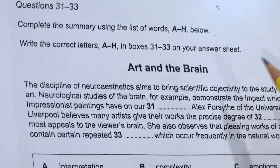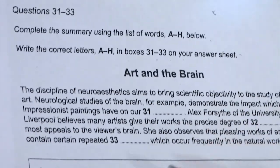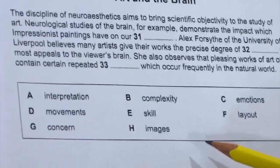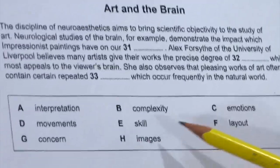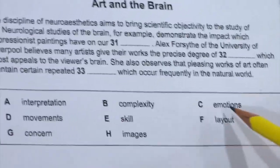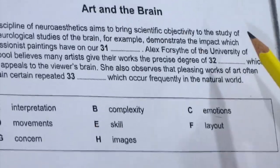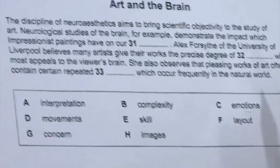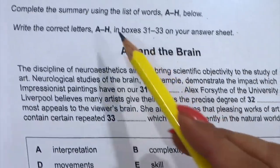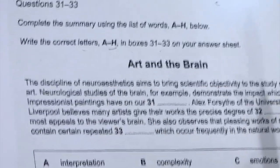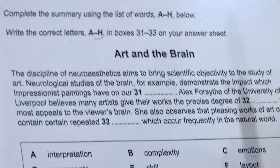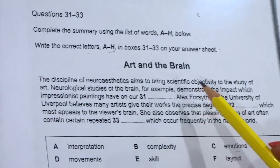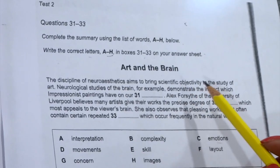Make sure you are writing the words from A to H. You are going to use the word A, B, C, E, or H. But you are not going to write the full word like 'interpretation', 'complexity', or 'emotions'. If you write the full word, you will lose marks because they have mentioned: write the correct letter A to H. Now we know that when they have mentioned a list of words, there will be synonyms, so we are already ready that there will be synonyms in the passage.